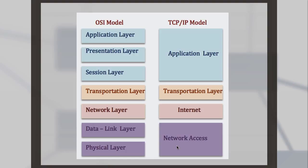It is basically the same thing, where the first layer — the application layer — encloses the application, presentation, and session layers from the OSI model. The transportation layer remains the same, and the network layer performs the function of the internet layer and vice versa. The network access layer encloses the data link layer and the physical layer from the OSI model.